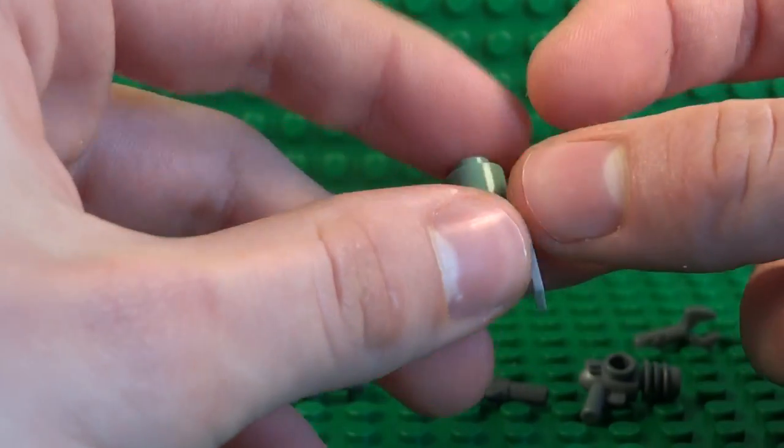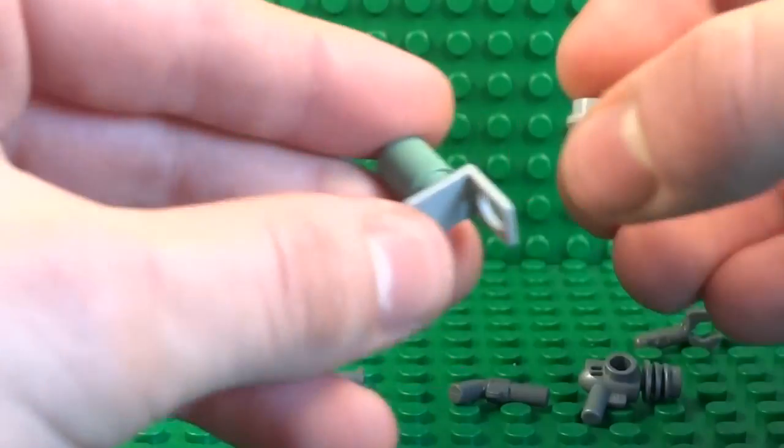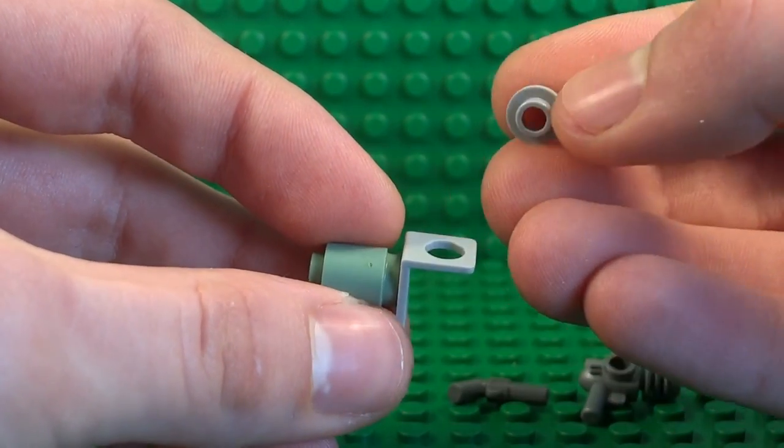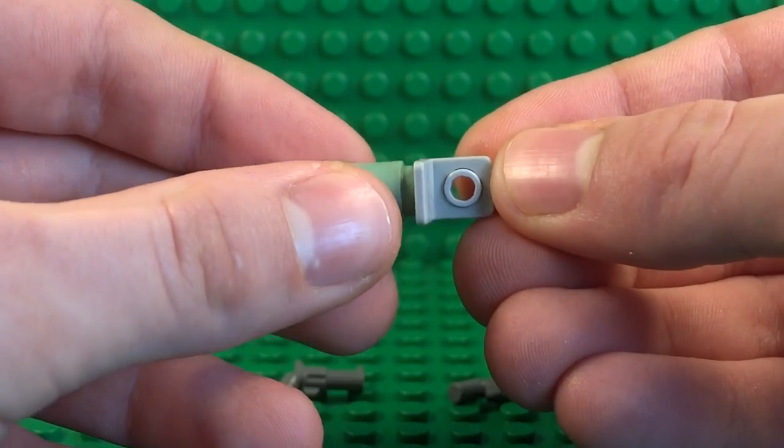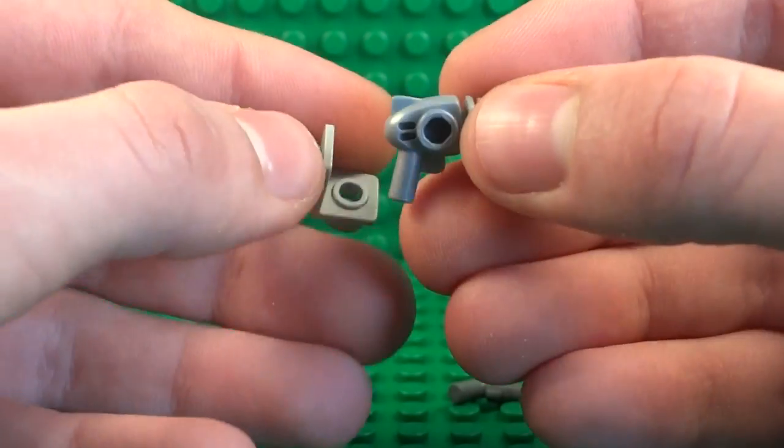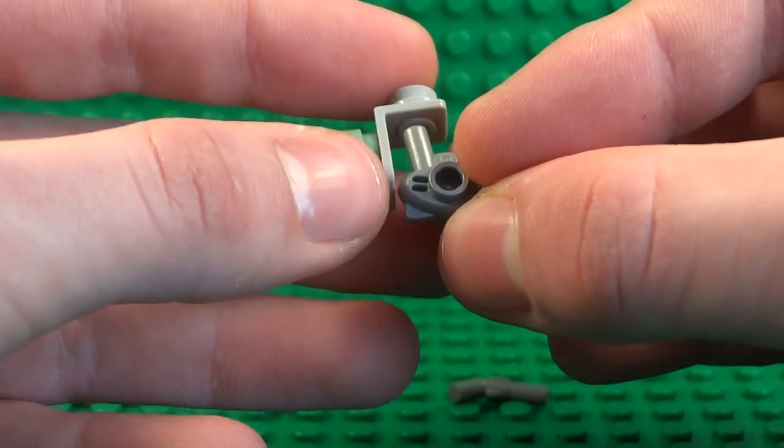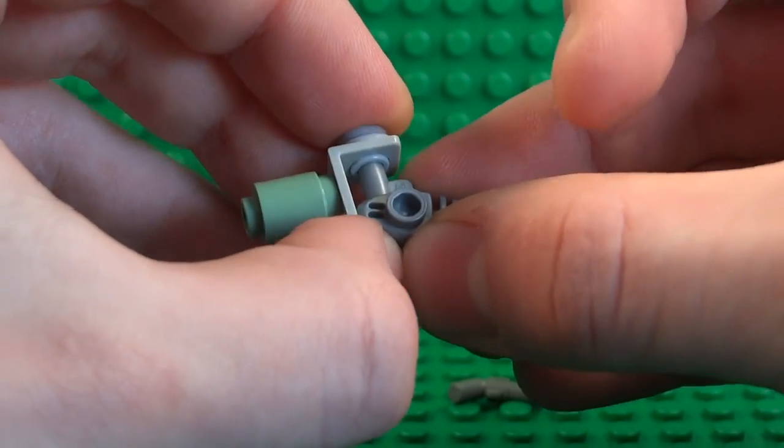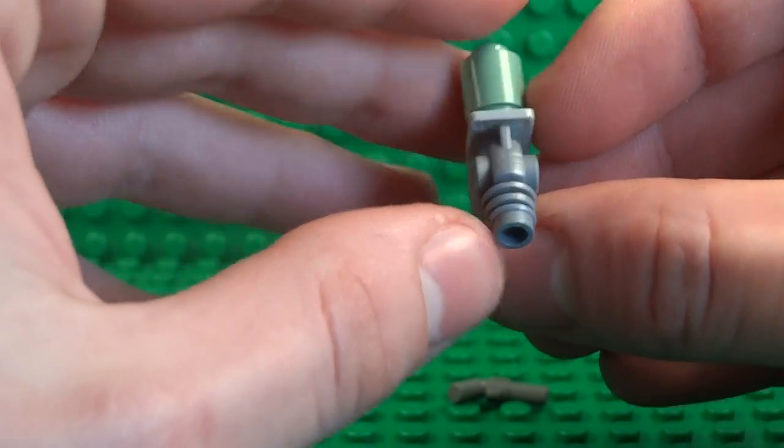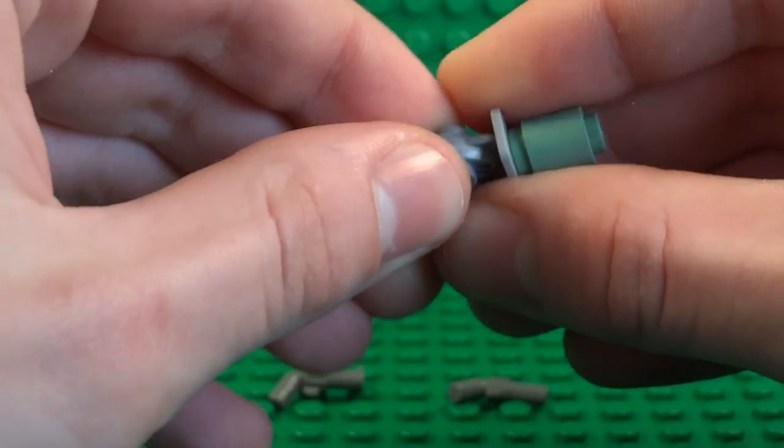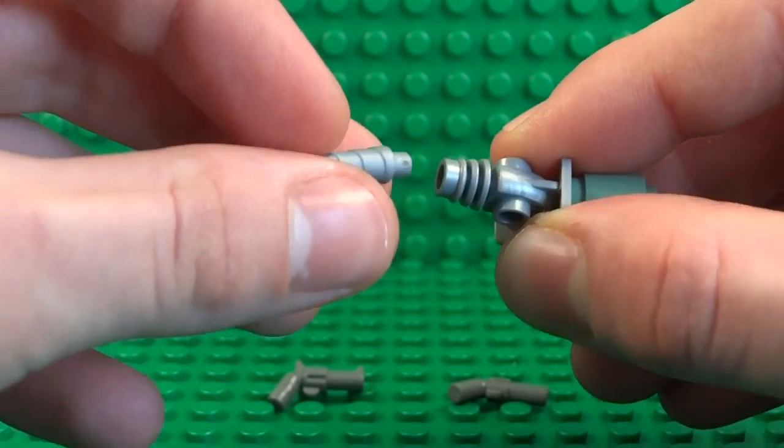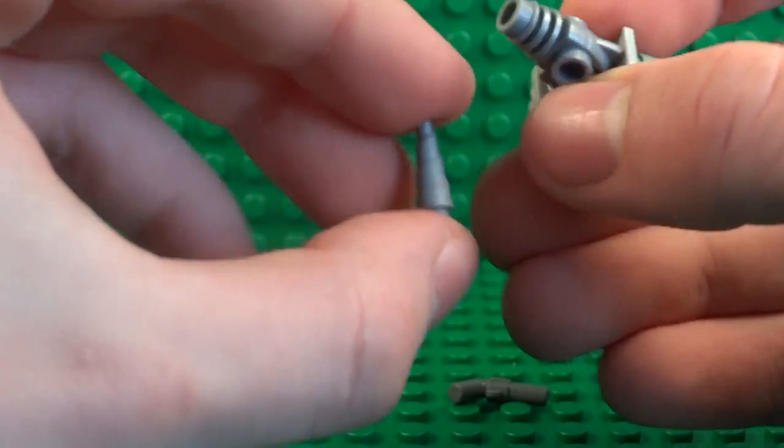And then on the back of that neck bracket piece attach another one of these studs with bar hole in them, attach that on the back there. And through that you can take a Lego space ray gun piece, and this is obviously not a ray gun on the in-game Big Daddy, but this is the start of the drill.